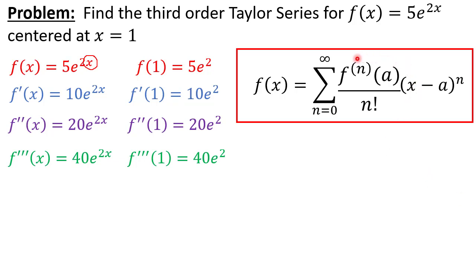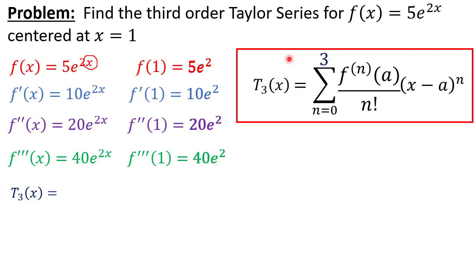Now we've basically got our nth derivative terms evaluated at x equals a. To find our third order Taylor series, which we'll denote as T sub three of x, instead of finding an infinite number of terms for our exact series, we can just go from n equals zero to three. So T sub three of x is going to go to the third term and then add all these up.